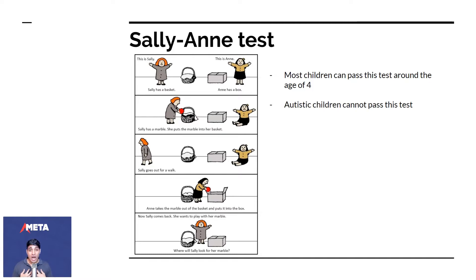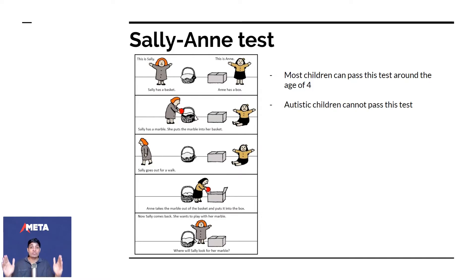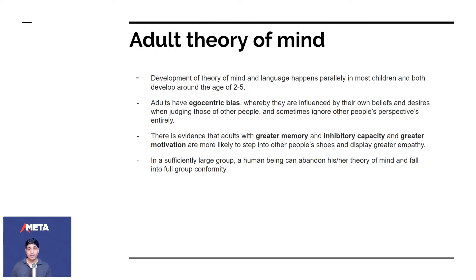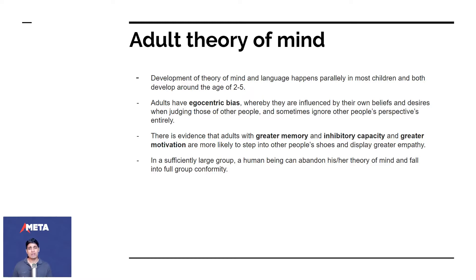What information set would Sally have in her head when she came back? That is the basis of all empathy. The development of theory of mind and language happens in parallel in most children, and most develop around the age of two to five.